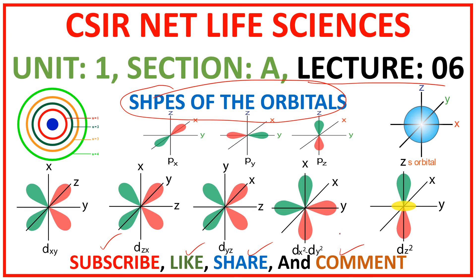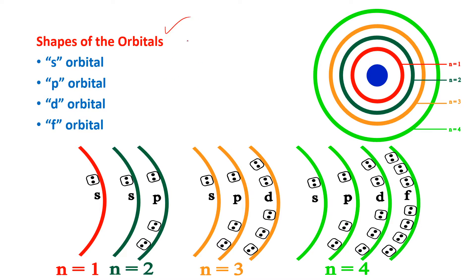Let us start our discussion on the shapes of the orbitals. So what is meant by orbital? As we discussed in the previous lesson, orbitals are present in the subshells. In this rough model of the atom, the center is the nucleus, and around the nucleus you can see the shells: n=1, n=2, n=3, and n=4.